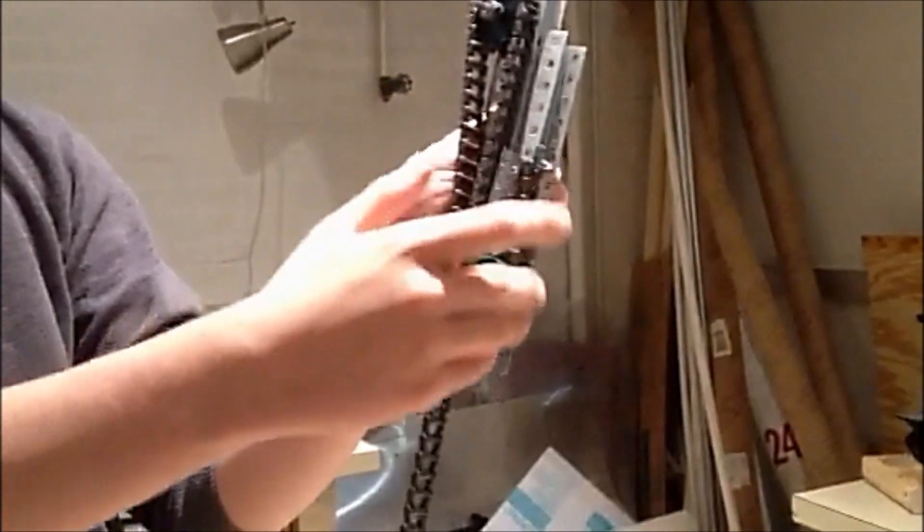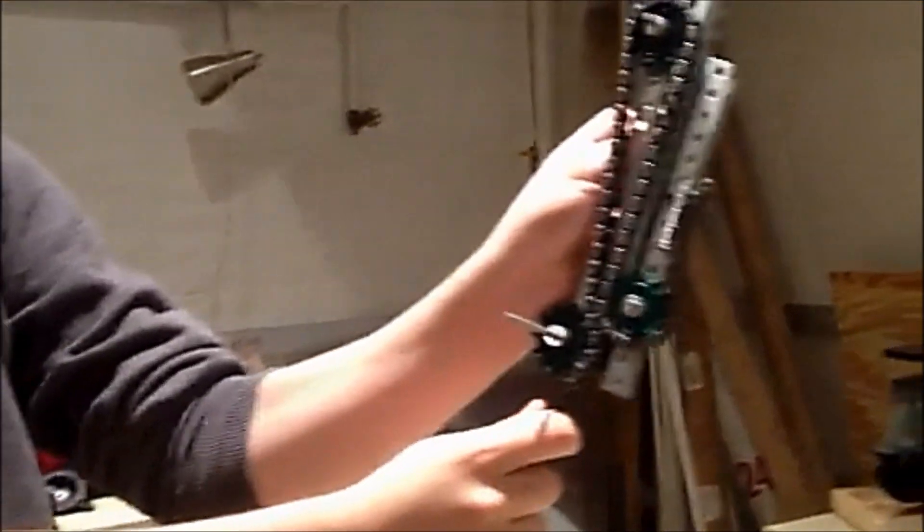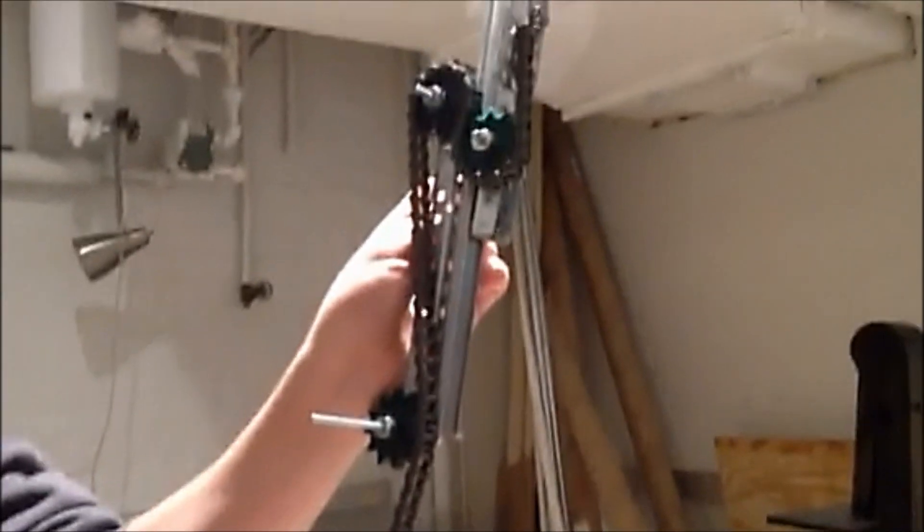Basically what you do is have one chain running through each metal bar of the lift, so when I tug on this chain on the bottom, it lifts up this bar.